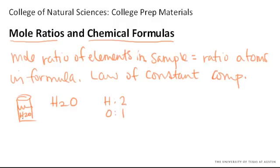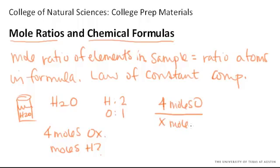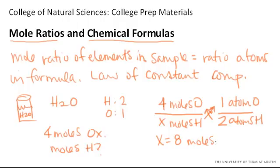And so, if you analyze this glass of water and you found that you had four moles of oxygen, how many moles of hydrogen would there be? Well, you can find that based on this ratio. So, for every mole, four moles of oxygen and you wanted to solve for moles of hydrogen, that has to be the same as one atom of oxygen for every two atoms of hydrogen. And when you cross multiply and solve for X,